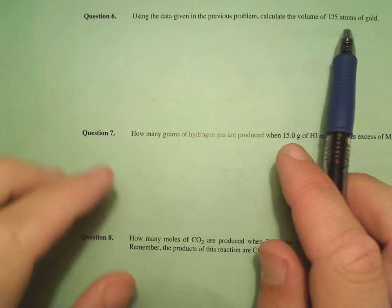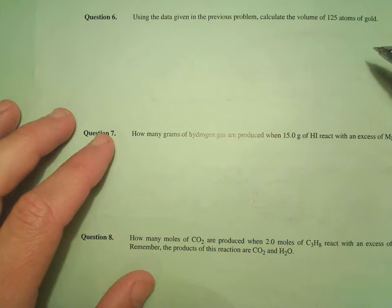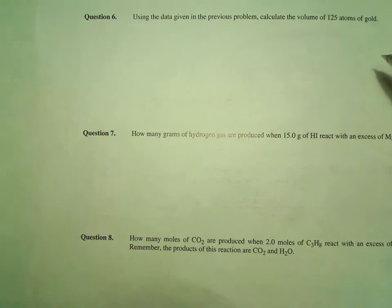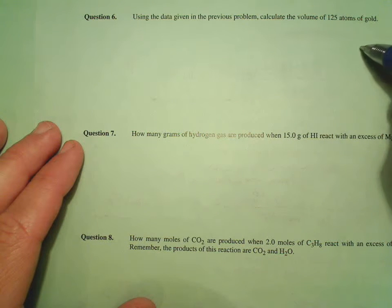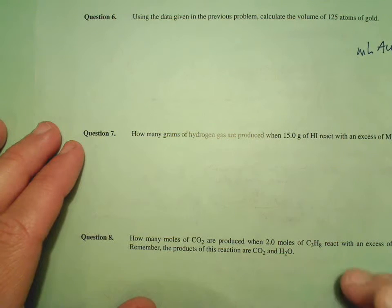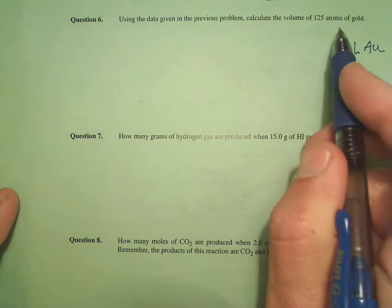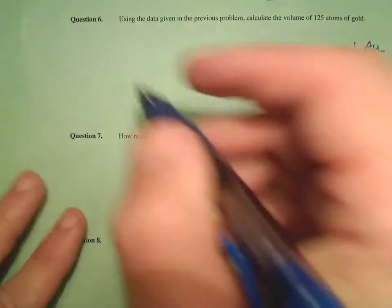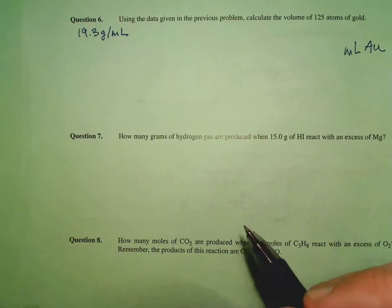Using the data given, we have 125 atoms of gold and we're trying to calculate the volume. Let's make it easy on ourselves and figure out the volume in milliliters. So we know that the units of our answer are going to be milliliters of gold. There's only one place to start — we have 19.3 grams per milliliter, and that's the density.